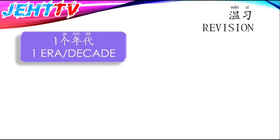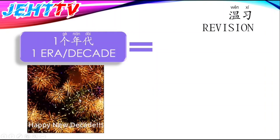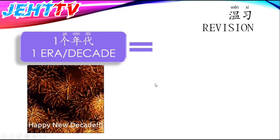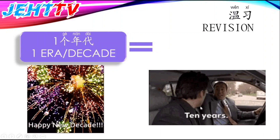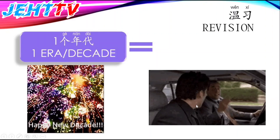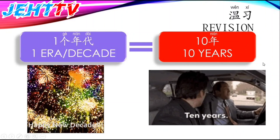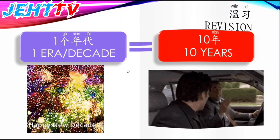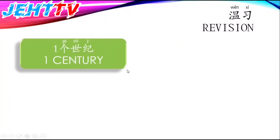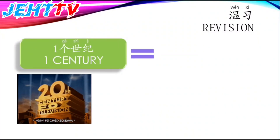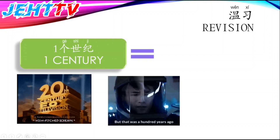Next, we look at one era or one decade. One decade equals how many years? Let's look at the video. Happy new decade — one decade is equals to ten years. So one era or decade is equals to ten years. Then, one century equals to how many years? Can you find the answer from the video?